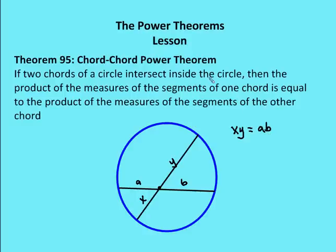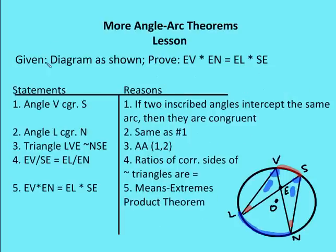So if two chords of a circle intersect inside the circle, then the product of the measures of the segments of one chord is equal to the product of the measures of the segments of the other chord. We actually proved this two sections ago. We're given a diagram as shown — circle O — and I have two chords, VN and SL, that intersect at point E. We want to prove that EV times EN equals EL times SE — one portion of each chord times the remaining portion.